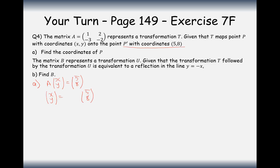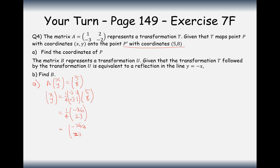What is the inverse of this matrix? We swap over the -2 and the 1, negate the 2, and negate the -3 so it becomes +3. The determinant is -2 minus -6, which equals 4, so the scalar is one-quarter. Multiplying out: -2 times 5 is -10, minus 16 gives -26. Then 3 times 5 is 15, plus 8 gives 23. So the original coordinates are (-26/4, 23/4).